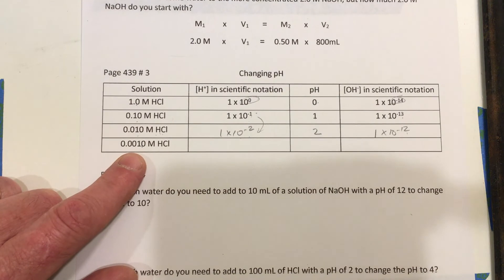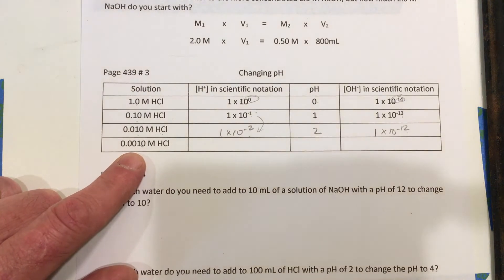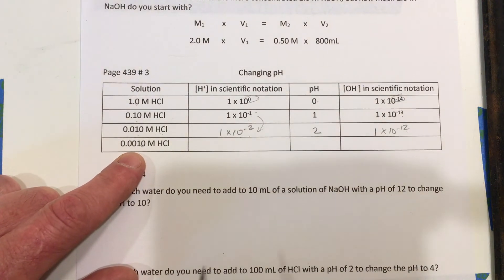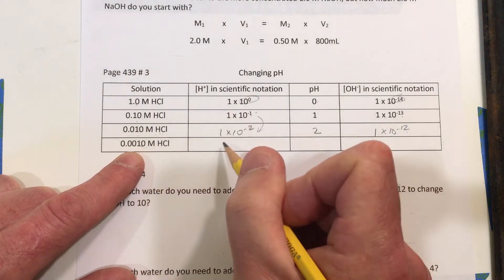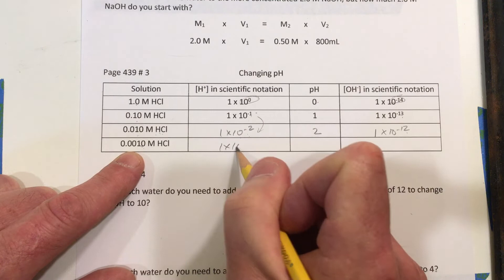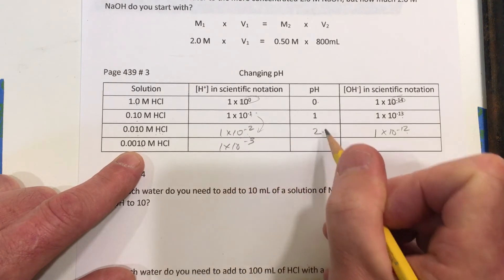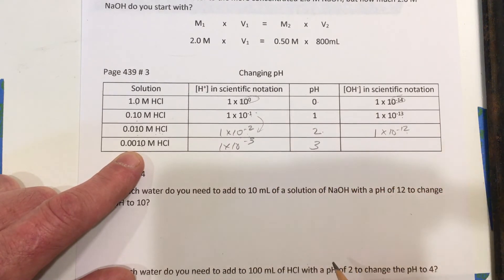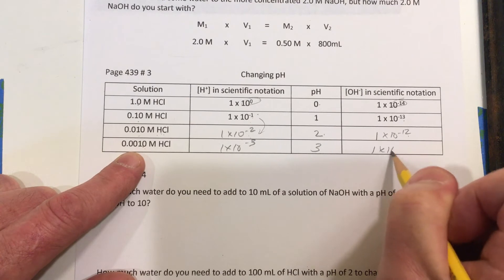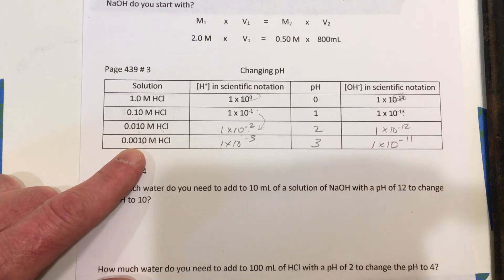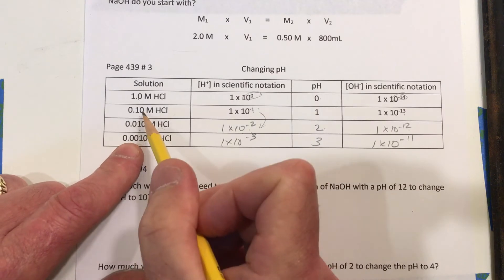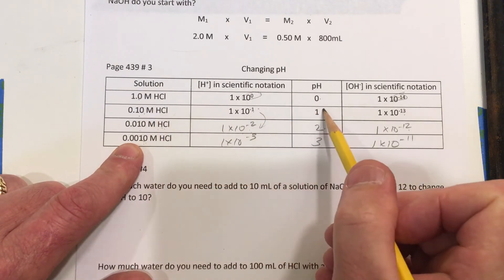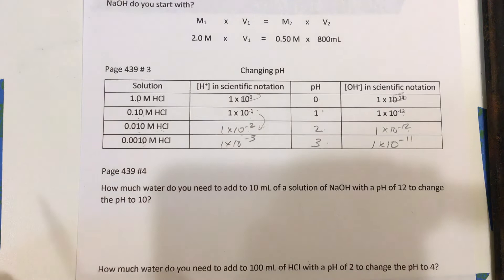So this is one-tenth of this one here. So once again, this will change to 1 times 10 to the negative 3. The pH will change by 1 to 3. And this will be 1 times 10 to the negative 11. So I think you see the pattern here. Check out this one. This is 1 one-hundredth of this one. And so the pH changes by 2.